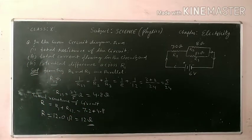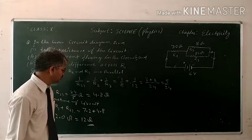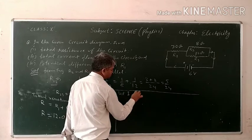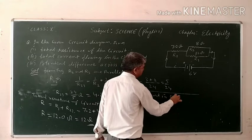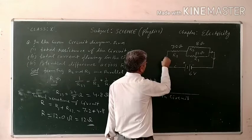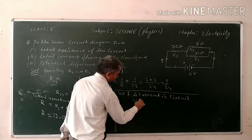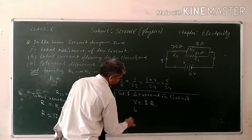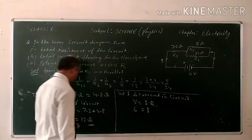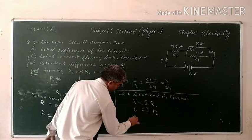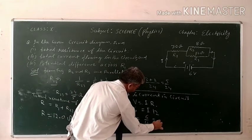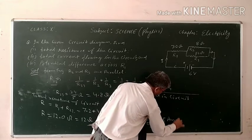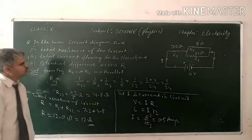Now I talk about the second part, total current flowing in the circuit. Suppose I is the current in the circuit. By the formula V is equal to I times R, so potential across the circuit is 6V and the current we have to calculate and the resistance, total resistance is 12. So I is equal to 6 upon 12, which is equal to 0.5 ampere. So total current in the circuit is 0.5 ampere.